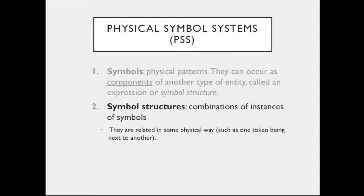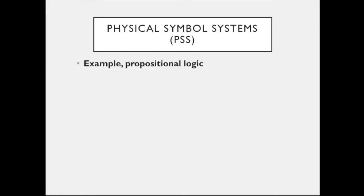Notice that the putting together of the symbols must also be physically realized — it must be a physical operation. For instance, concatenation may be realized by literally putting one token next to another, as when you're writing formulas. What the authors have in mind as examples, when they talk about physical symbol systems, is often formal logical systems being run on machines.